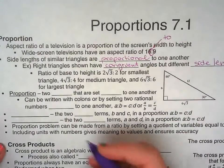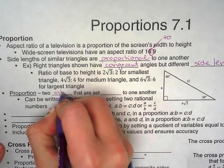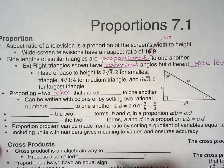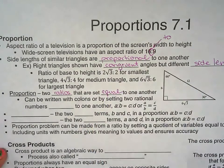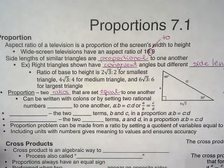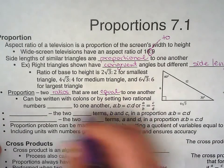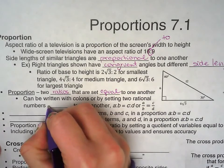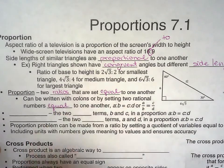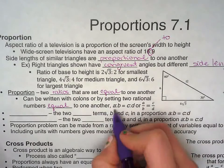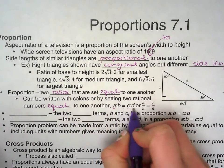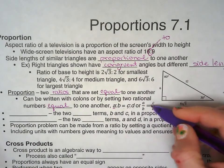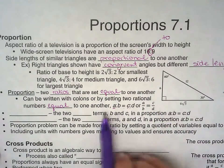Now a proportion is two ratios that are set equal to one another. It can be written in two different ways by setting two rational numbers equal to one another, like a to b equals c to d, or a over b equals c over d. They mean the same thing.